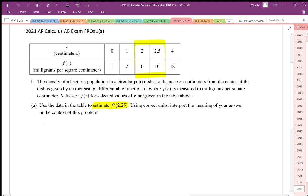So it looks like this. f prime at 2.25 is approximately equal to the secant line which is f of 2.5 minus f of 2 over 2.5 minus 2, or 10 minus 6 over 0.5, and that gives us a value of 8.